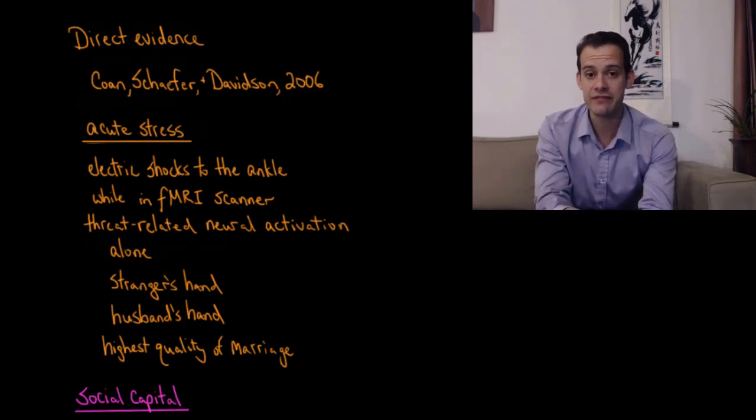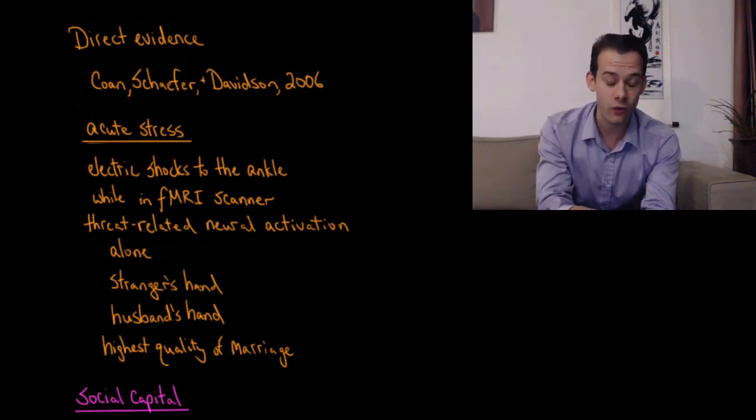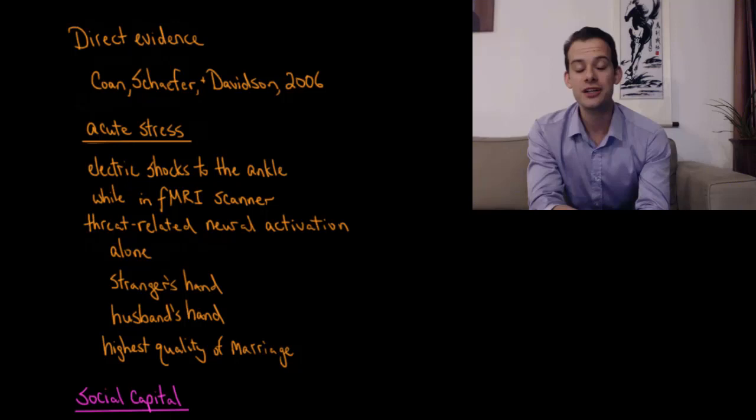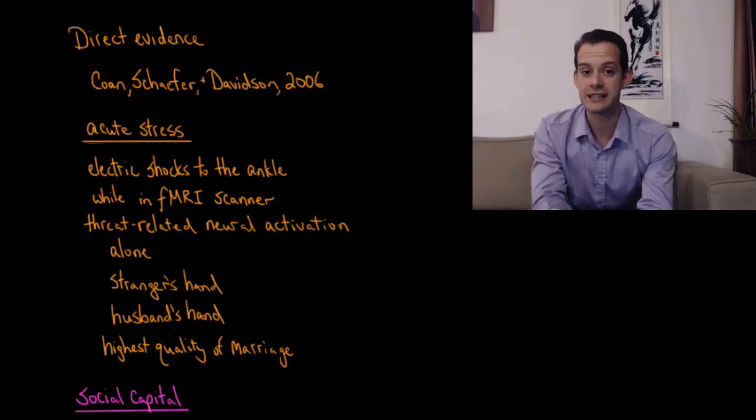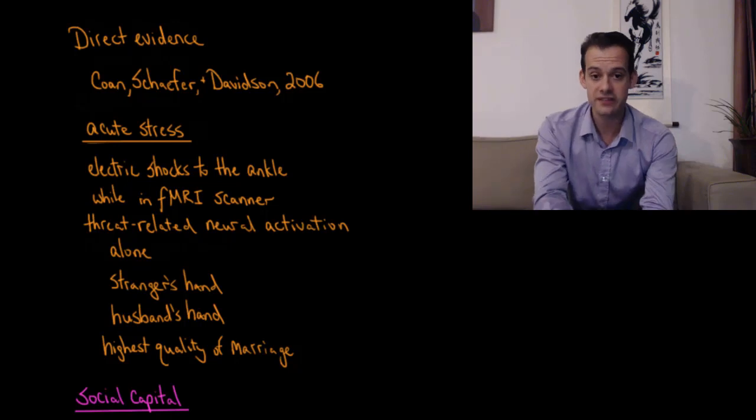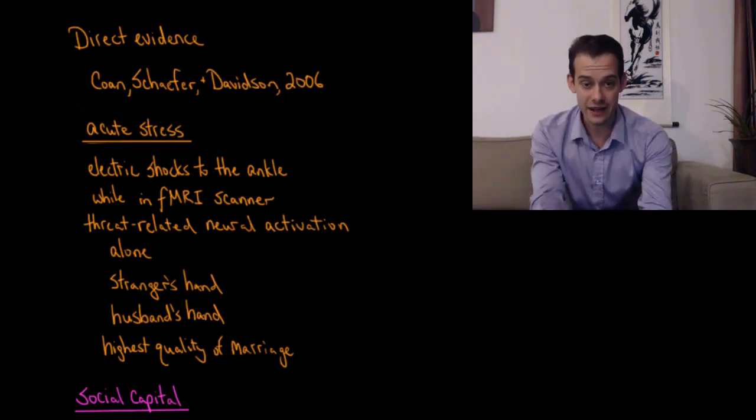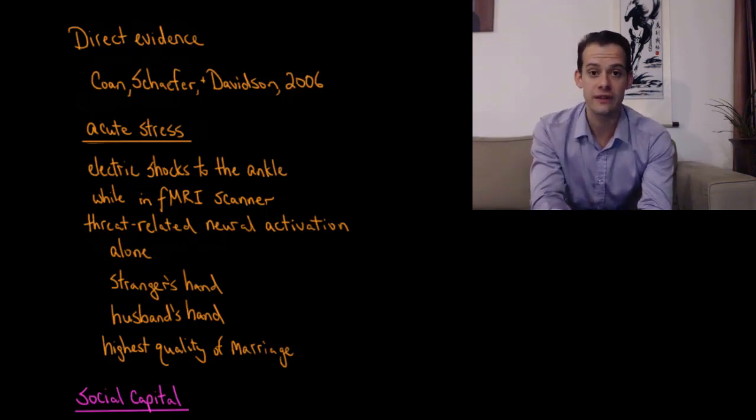And within that group they even found that the women who reported the highest quality of their marriage showed the greatest reductions in this brain activity associated with stress and threat. And so this suggests that having some social support can help us in immediate terms to deal with an acute stressor that we're currently experiencing.